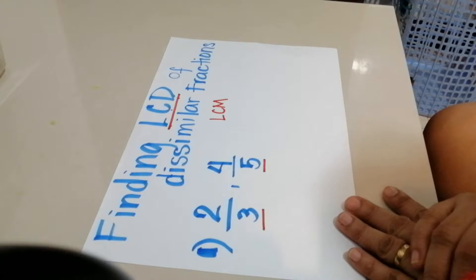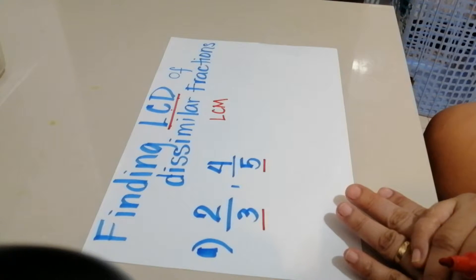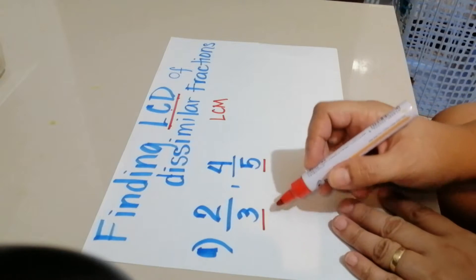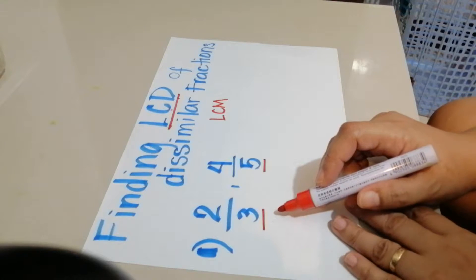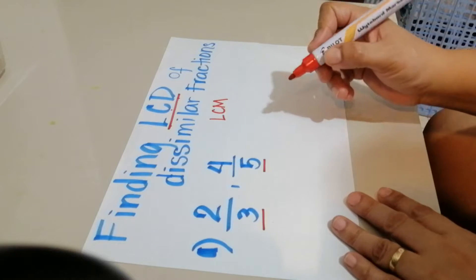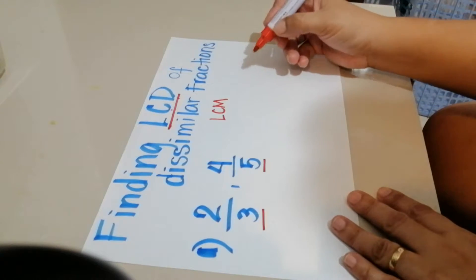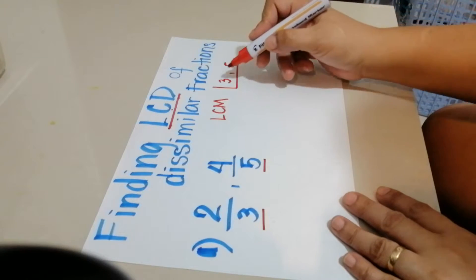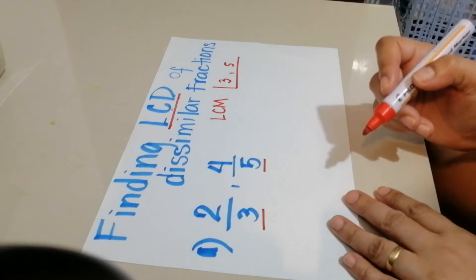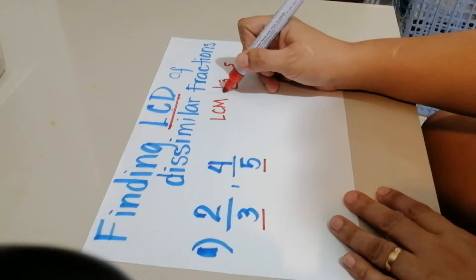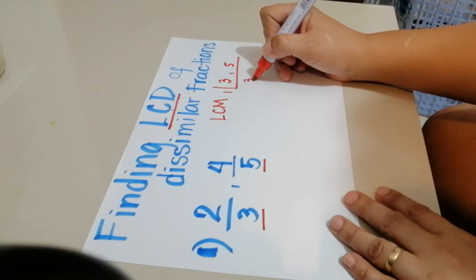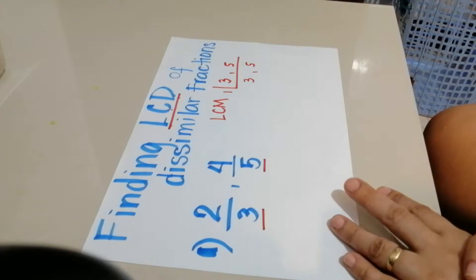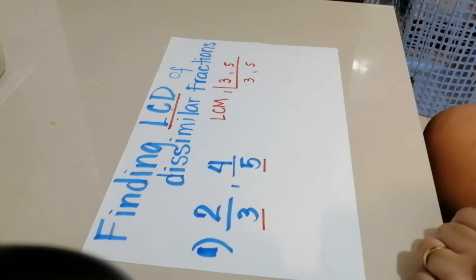For getting the LCM, we can use two ways: factor tree and continuous division. Here, we need to get the LCD of 3 and 5. Using continuous division, we write 3 and 5. What common number can divide both of them? That is only 1. So 3 divided by 1 is 3, and 5 divided by 1 is 5.